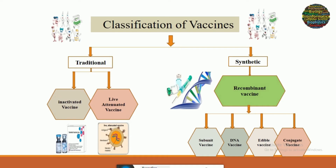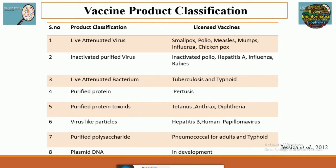The different classes of vaccines available include live attenuated viruses, with licensed vaccines against smallpox, polio, measles, mumps, influenza, and chickenpox. In the inactivated purified category we have vaccines against polio, influenza, hepatitis, and rabies, and so on with the rest of the table.